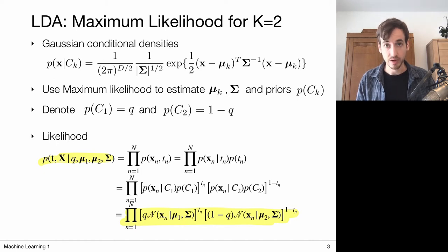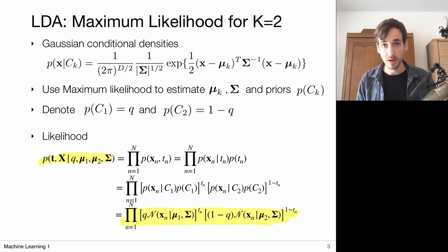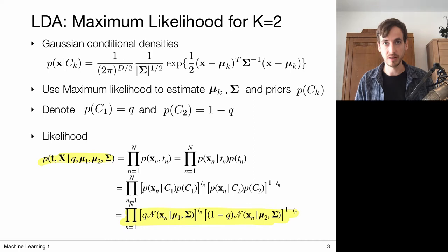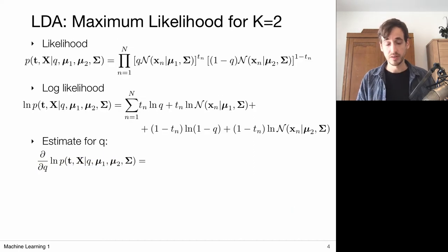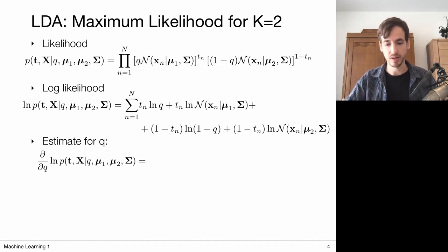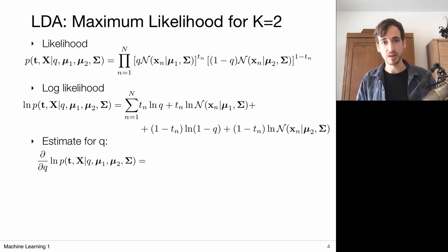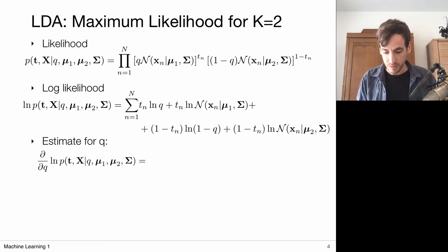The prior for class 1 is q times the class conditional distribution, and the same for the second class — (1-q) times the corresponding class conditional. We've done this in the regression case and the same principles apply here. So instead of optimizing the likelihood directly, we work with the log likelihood for convenience. The log of the product over all data points becomes a sum, and the product of the two terms splits into separate sums.